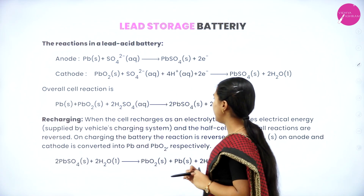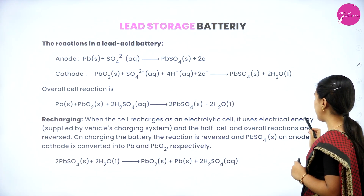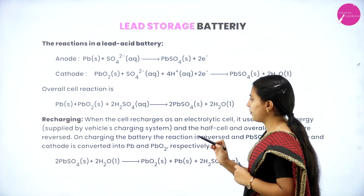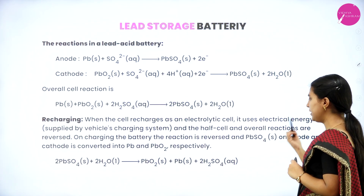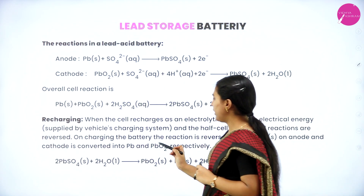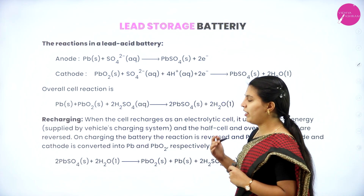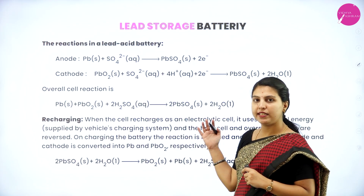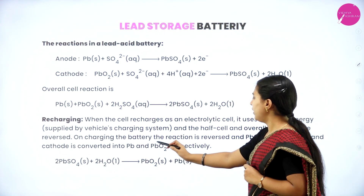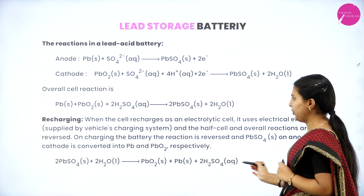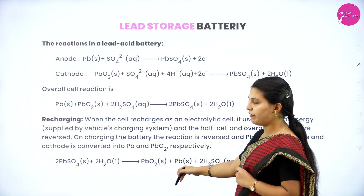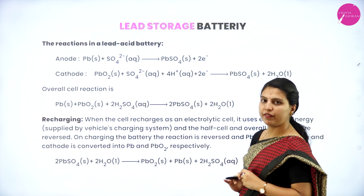On recharging, the cell acts as an electrolytic cell, using electrical energy and the half-cell and overall reactions are reversed. On charging the battery, the lead sulfate at both anode and cathode is converted back to lead and lead dioxide respectively. The recharging reaction: PbSO₄ + H₂O → PbO₂ + Pb + H₂SO₄ (reversed reaction).